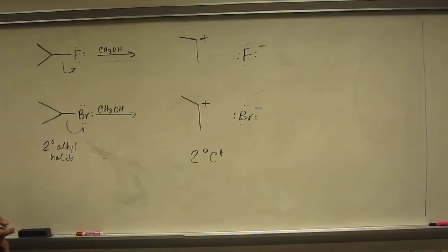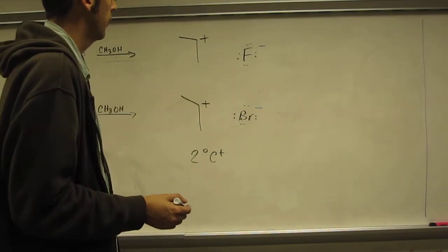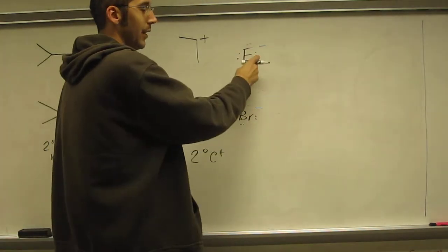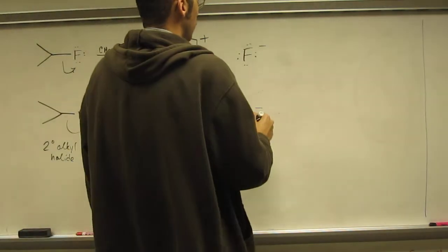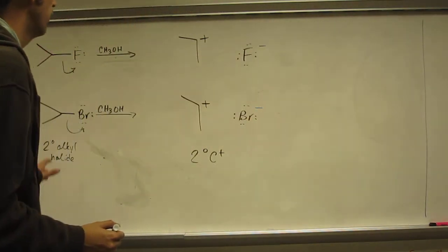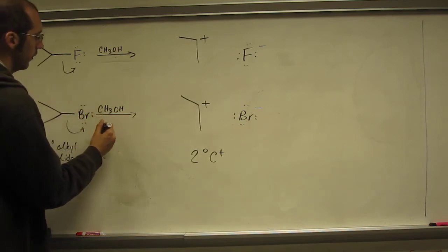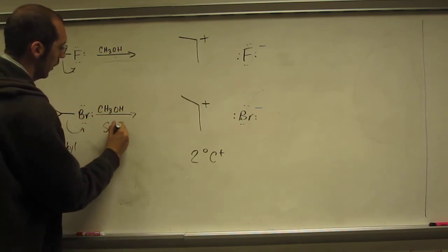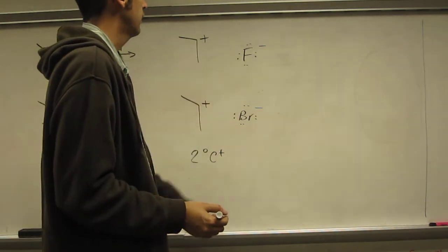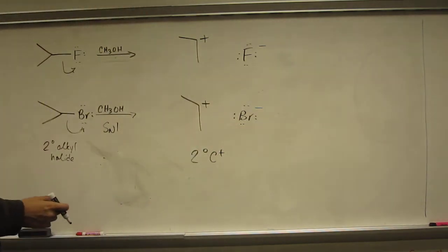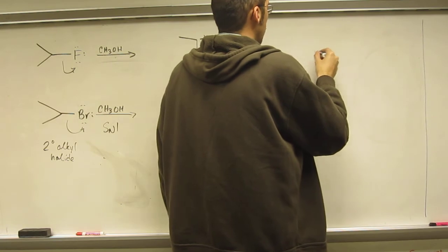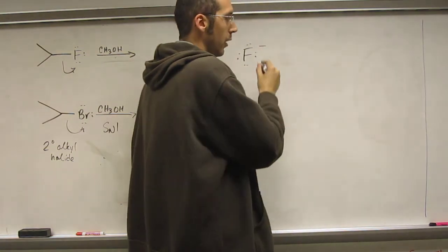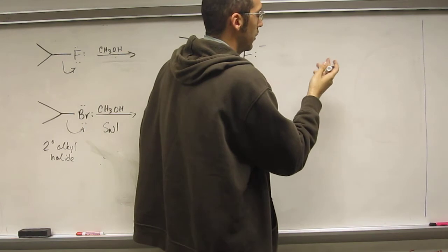The only determining factor, the rate determining factor should be what is the leaving group, so that's what we're really looking at, which is the better leaving group? So that's the real question we're asking here, when we're really asking which is the faster SN1 reaction. So which is the better leaving group? Well, they both have a negative one charge, so that's what you're really looking at. Well, you've got to compare their charge, it's the same charge, so now we've got to compare something else.